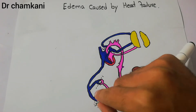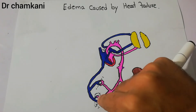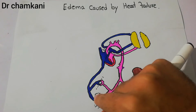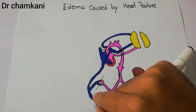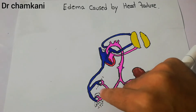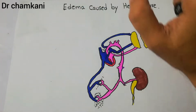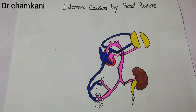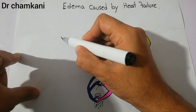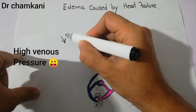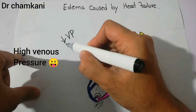Due to increased capillary pressure and high venous pressure, a lot of plasma — a lot of fluid — oozes out into the interstitium, into the extracellular spaces, and edema occurs.